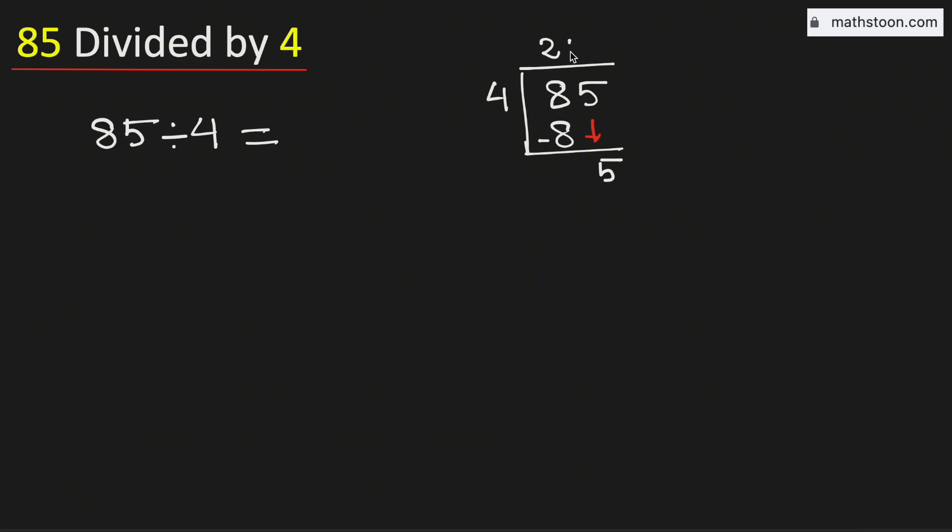Now 4 times 1 is 4. Subtract, we get 1. Now as 1 is less than 4, but we have no number to bring down here.